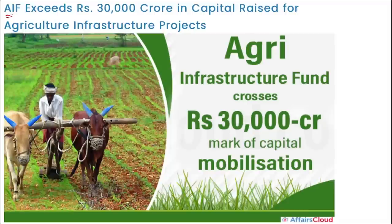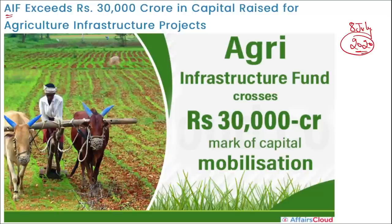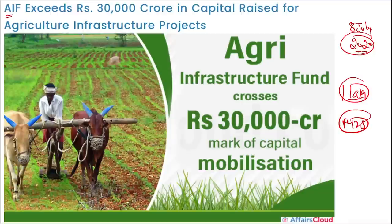The Agriculture Infrastructure Fund (AIF) has raised more than 30,000 crore rupees in capital for agriculture infrastructure projects, with a sanctioned amount of 15,000 crore rupees. AIF is a financing facility introduced on 8th July 2020 for the creation of post-harvest infrastructure and community farm assets across India. It is a central sector scheme launched by the Department of Agriculture and Farmers Welfare. The scheme will disburse around 1 lakh crore rupees by the end of fiscal year 2025.